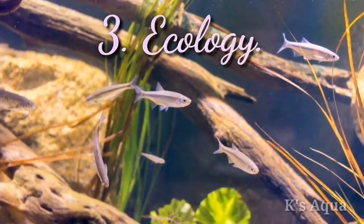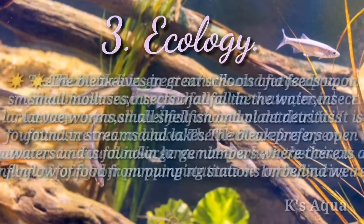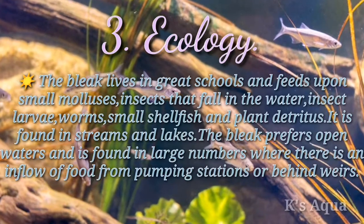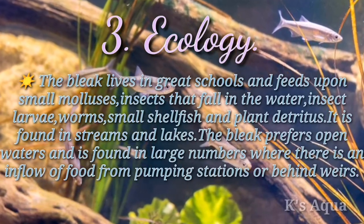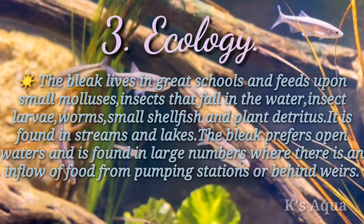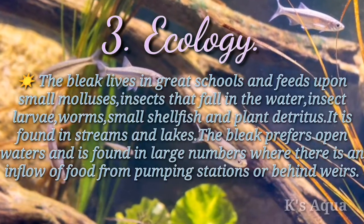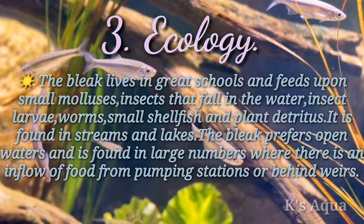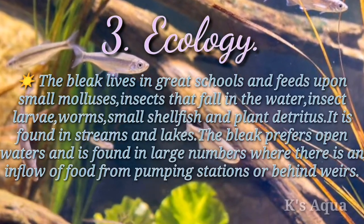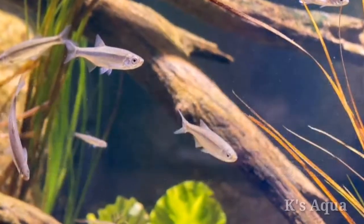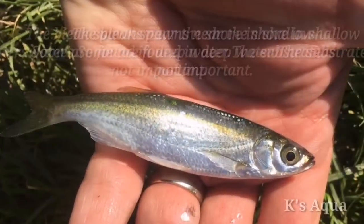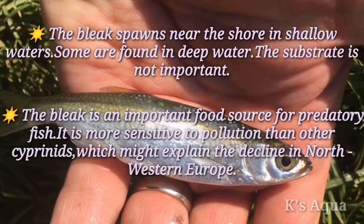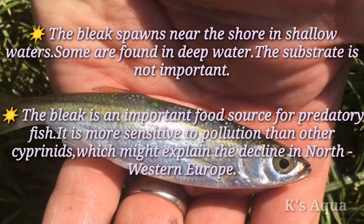Ecology: the bleak lives in large schools and feeds upon small molluscs, insects that fall in the water, insect larvae, worms, small shellfish, and plant detritus. It is found in streams and lakes, preferring open waters, and is found in large numbers where there is an inflow of food from pumping stations or behind weirs. The bleak spawns near the shore in shallow waters, though some are found in deep water, and the substrate is not important.